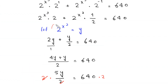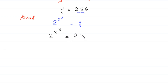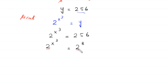Recalling our substitution, 2 to the power x³ equals y, and since y is 256, we have 2 to the power x³ is equal to 256. Since 256 is the same as 2 to the power 8, and we have the same base on both sides, we can write x³ equals 8.